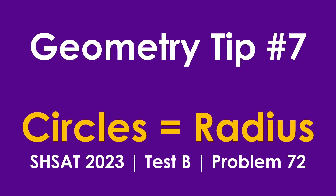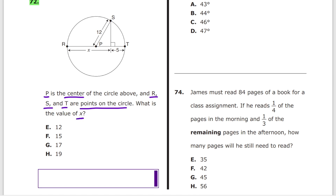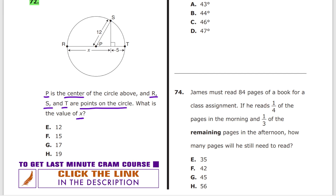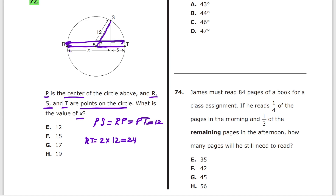Geometry tip number 7: circles and radius. Problem 72 from test B of SHSAT 2023. T is the center of the circle; R, S, and T are points on the circle. Since PS, RP, and PT are all radii, they all equal 12. RT is a diameter, so RT = 2 × 12 = 24. Since x + 5 = RT, we get x + 5 = 24, therefore x = 19, answer H. In circles, always pay attention to the radius.